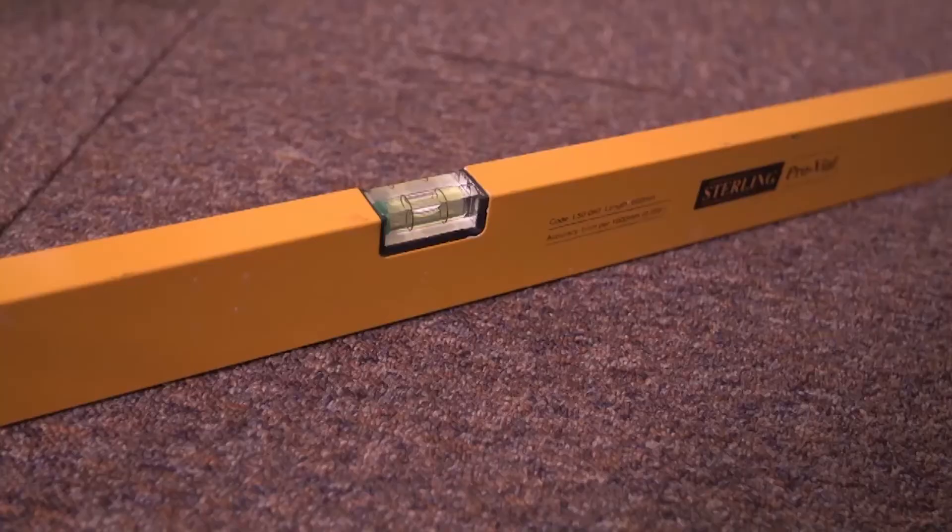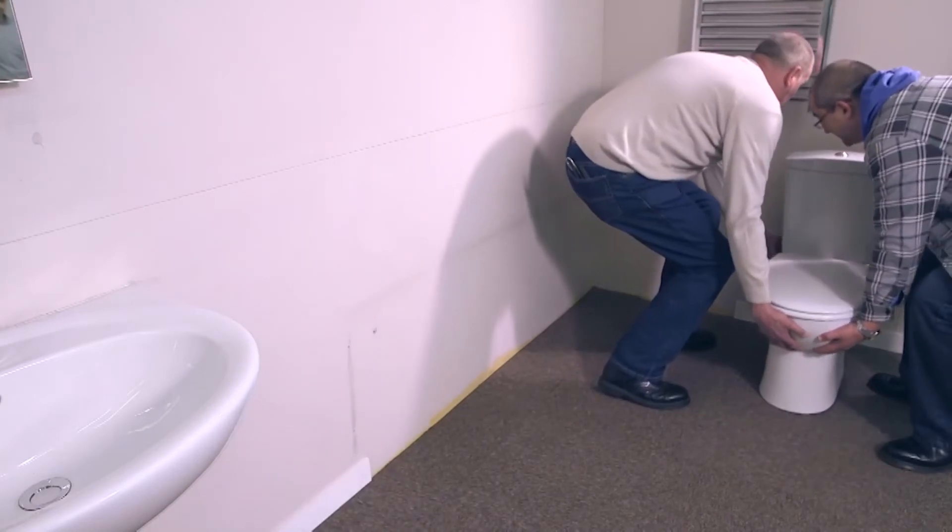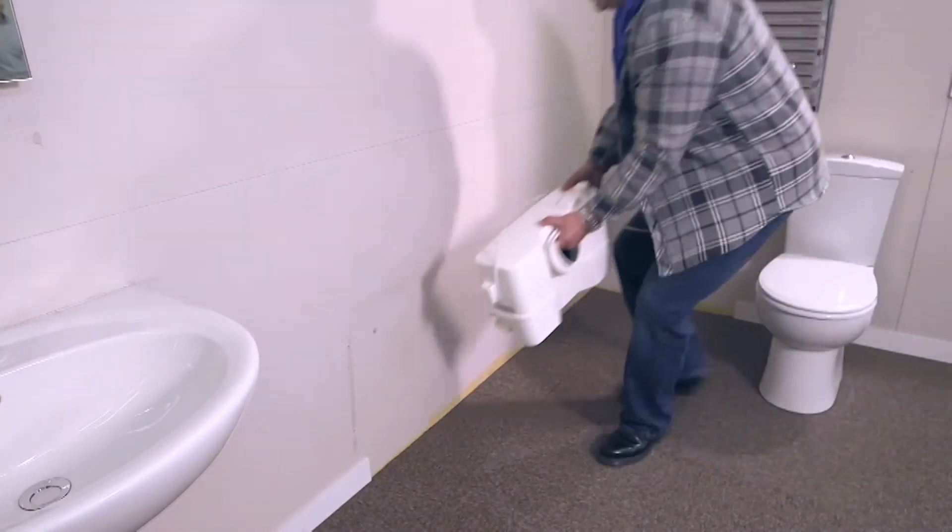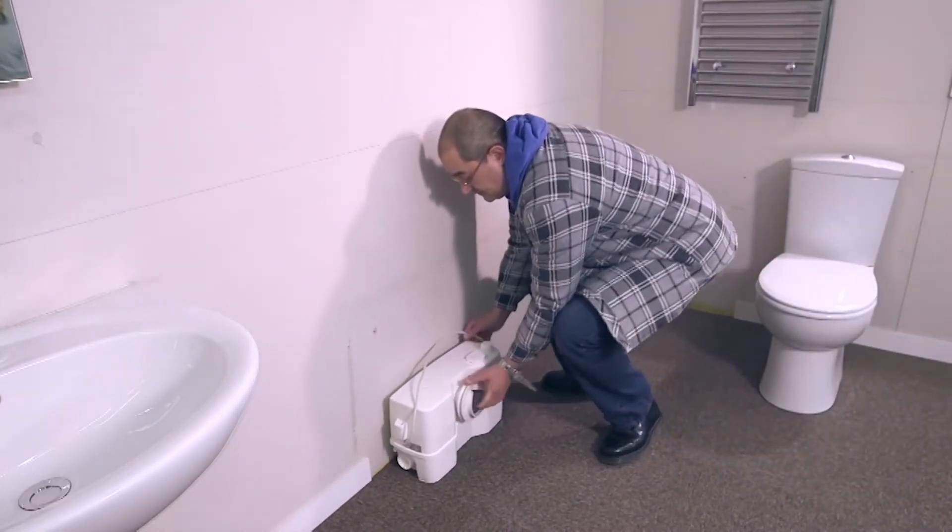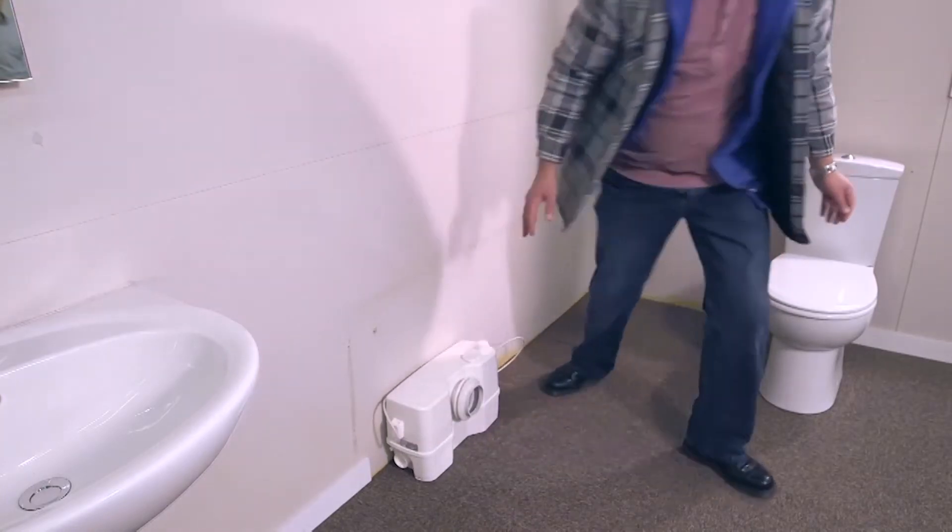Check that the floor is level and even. Decide on the position for the Solo Lift and toilet and allow easy access for post installation maintenance. Remember, to access the internal parts of the Solo Lift 2, you do not need to remove the toilet pan.